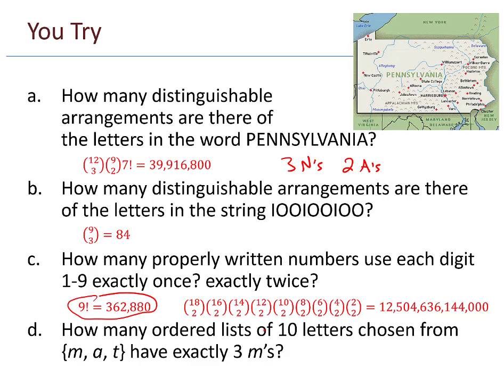And then part d, how many ordered lists of 10 letters chosen from m, a, t have exactly 3 m's? So you can do this in two stages. 10 choose 3 is first choosing where you're going to place the 3 m's. So maybe I'll choose there and there and there. 7 blanks remain, and for each of those 7 blanks I have 2 choices, either a or t. So that's where the 2 to the 7 comes in.